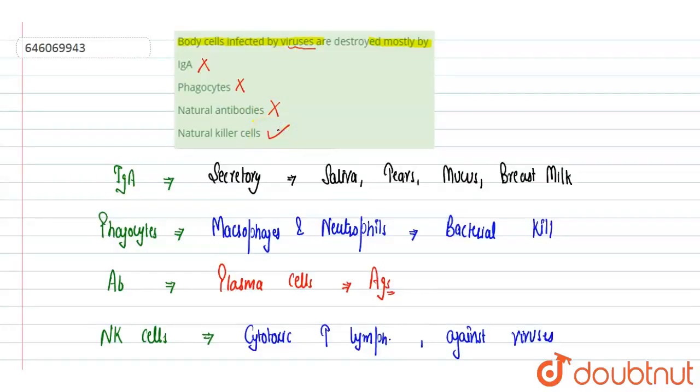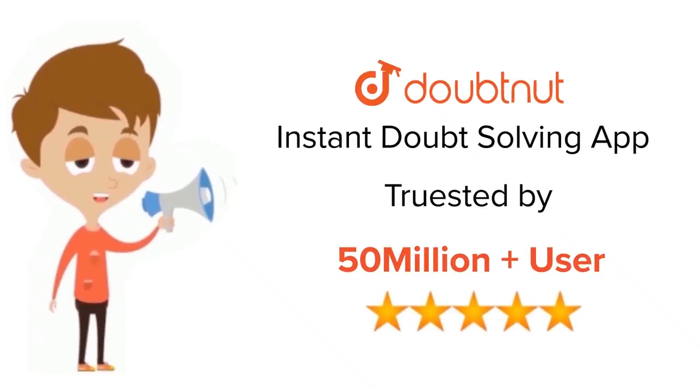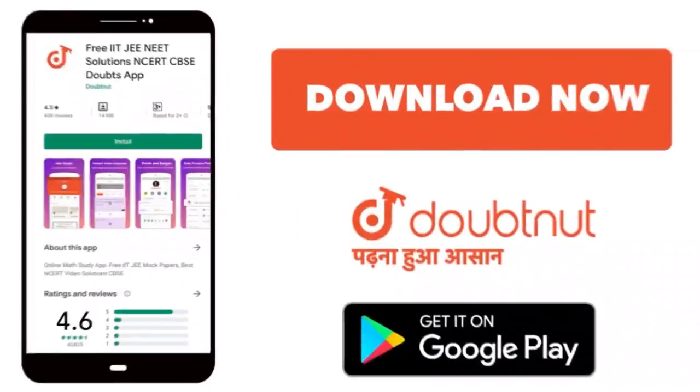the correct option. Option D is correct. Hope you get it. Thank you. For class 6-12, IIT-JEE, and NEET level, trusted by more than 5 crore students, download DoubtNet app today.